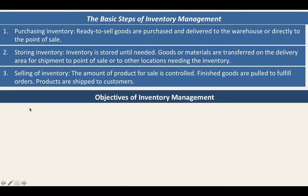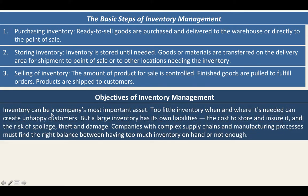Let us discuss the objectives of inventory management. Inventory can be a company's most important asset. Too little inventory, when and where it's needed, can create unhappy customers. But a large inventory has its own liabilities — the cost to store and insure it, and the risk of spoilage, theft, and damage are just a few disadvantages of maintaining a large inventory. Companies with complex supply chains and manufacturing processes must find the right balance between having too much inventory on hand or not enough.